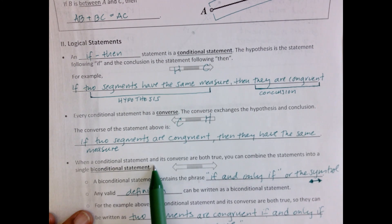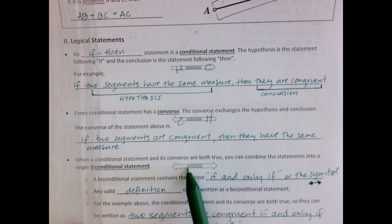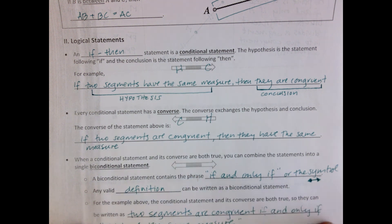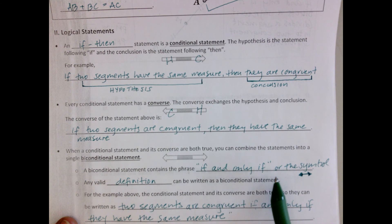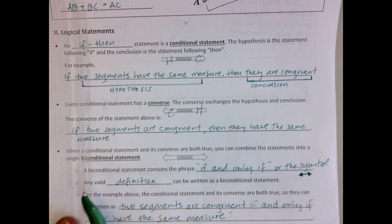When a conditional statement, make sure you're getting this down, write it all down. When a conditional statement and its converse are both true, you can combine the statements into a single biconditional statement. For example, a biconditional statement contains the phrase if and only if, or the symbol. You'll see this symbol sometimes. It's a little tiny line with arrows on both ends. Any valid definition can be written as a biconditional statement.